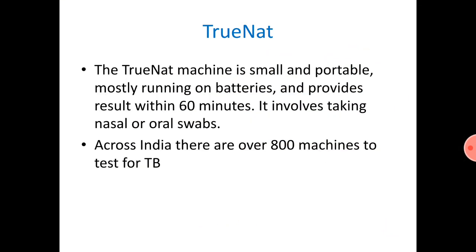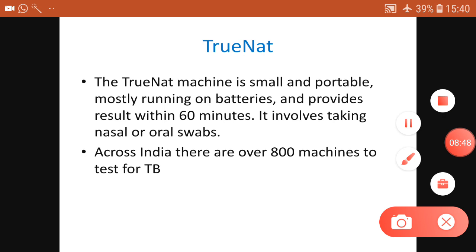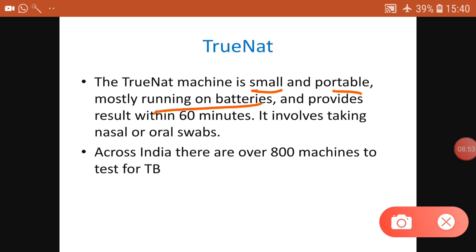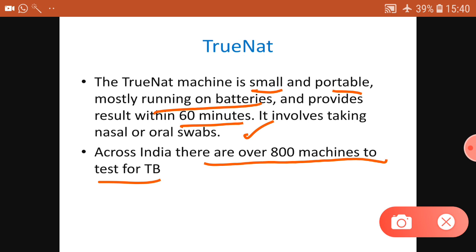TrueNAT is smaller and portable, mostly running on batteries, and delivers results within 60 minutes. Like RT-PCR, it involves taking nasal and oral swabs. Across India there are almost 800 TrueNAT machines already used for TB testing, and those same machines can be reused for COVID-19 testing.